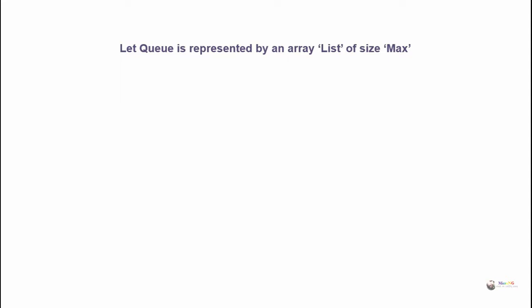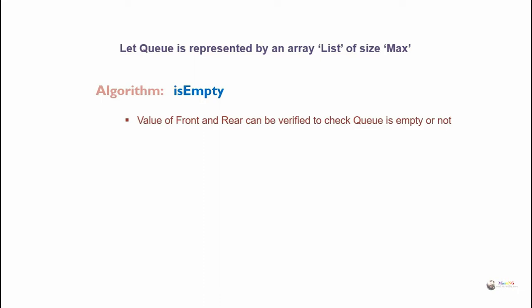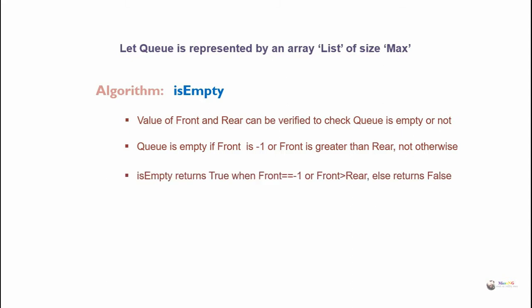Let queue be represented by an array list of size max. For the isEmpty algorithm, the value of front and rear can be verified to check whether the queue is empty or not. Queue is empty if front is minus one or front is greater than rear, not otherwise. isEmpty returns true when front is minus one or front is greater than rear, else it returns false.